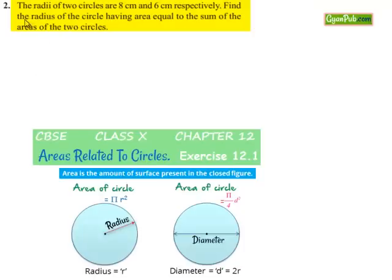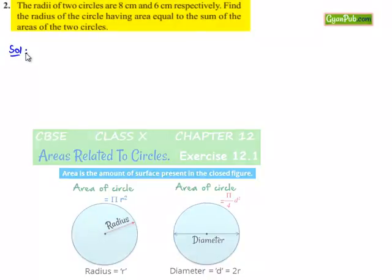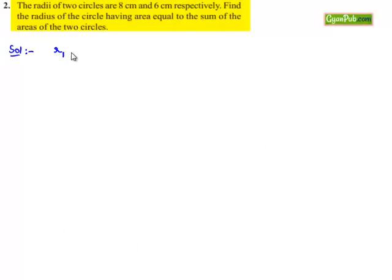Coming to the second question: the radii of two circles are 8 cm and 6 cm respectively. Find the radius of the circle having area equal to the sum of the areas of the two circles. Now moving on to the solution. Let us consider the two radii as R1 = 8 cm and R2 = 6 cm.